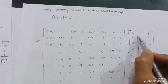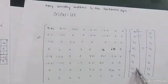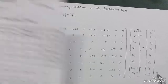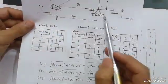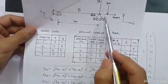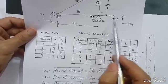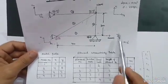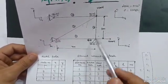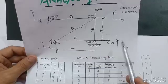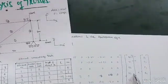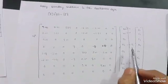So u1 = 0, v1 = 0, u4 = 0, v4 = 0. There is also a roller support, so displacement along the x-axis (u2) is allowed but displacement along y (v2) is zero — it cannot move upward or downward. So v2 = 0 and u2 will remain.